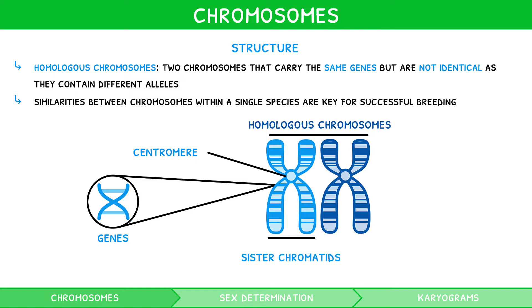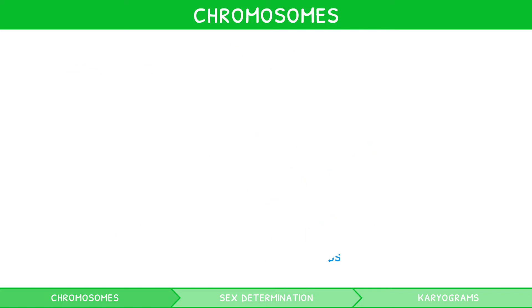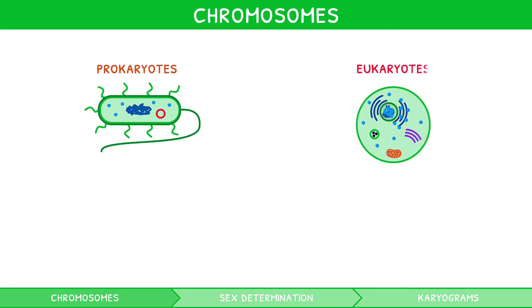It is worth noting that similarities between chromosomes within a single species are key for successful breeding. However, chromosomes vary between different organisms. When comparing prokaryotes and eukaryotes, they are found in two distinct forms.